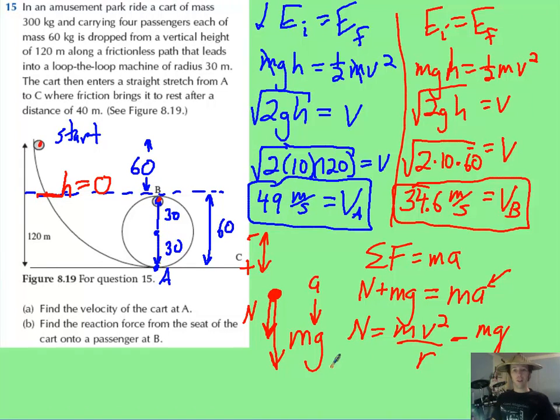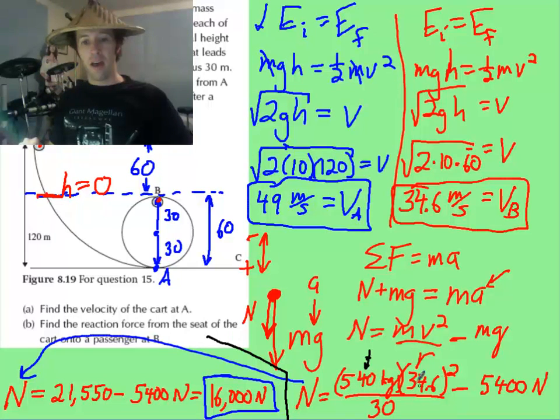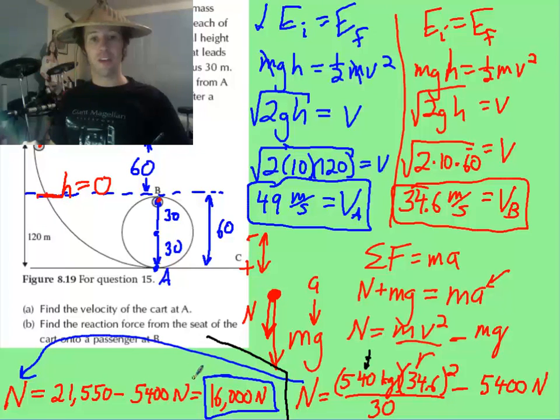Now it's just a matter of plugging in the numbers. And hopefully you can follow how I plugged in the mass, which once you add in the people, turned to be 540. I unplugged in my velocity and the radius of the circle, and then the weight turned out to be the 540 kg times 10. I went over here, and I ended up with this 16,000 newtons.